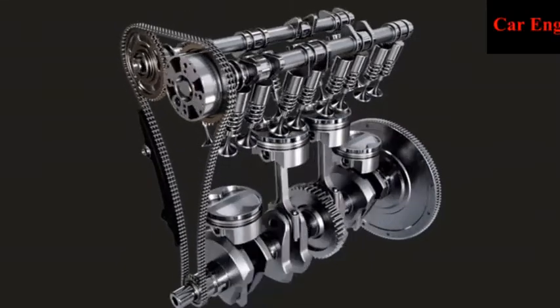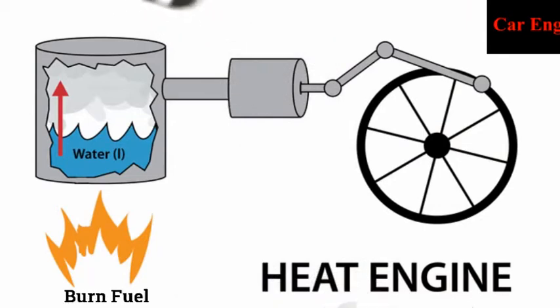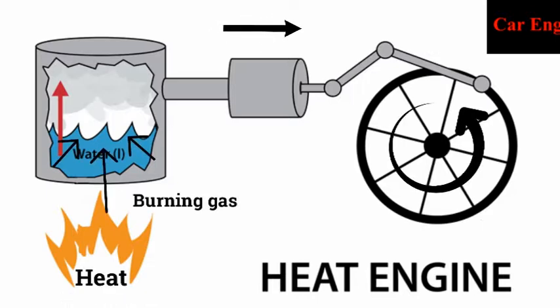Heat engines are designed to convert one form of energy into mechanical energy. They burn fuel to create heat, which is then used to do work. It is a complex machine built to convert heat from burning gas into the force that turns the wheels.